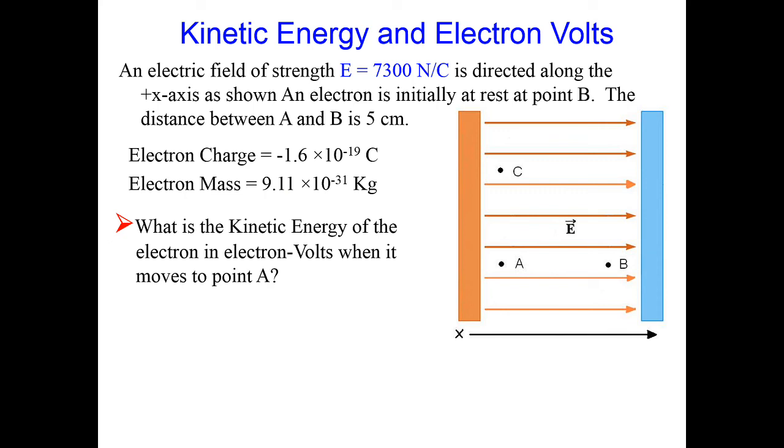So, now we have an electron, and we accelerate it from point B to point A against a uniform electric field of 7,300 newtons per coulomb. The electron starts at rest, and we are asked to find the kinetic energy in electron volts if A and B are 5 centimeters apart. Okay, so this is going to be much simpler.